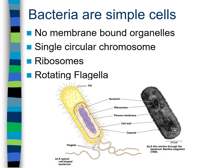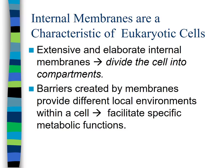Eukaryotic cells are what you, your dog, your cat, your plants are composed of — essentially every living thing you can see with your naked eye. They are much larger than prokaryotic cells, usually about 100 times larger. A key characteristic is their extensive internal membrane system, which divides the cell into multiple compartments with different local environments allowing for specific functions. These compartments are called organelles.